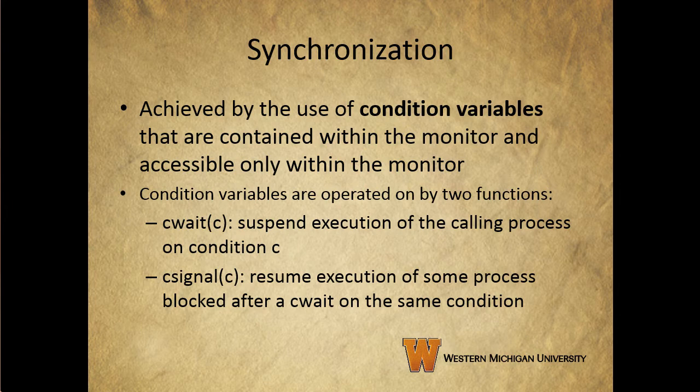A monitor supports synchronization by the use of condition variables that are contained within the monitor and accessible only within the monitor. Condition variables are a special data type in monitors which are operated on by two functions. These are going to sound familiar from our discussion of semaphores, but there are differences. C-wait tells the monitor to suspend execution of the calling process on condition C, and the monitor is then available for use by another process. C-signal resumes the execution of some process blocked after a C-wait on the same condition. If there are several such processes, we choose one of them, and if there's no such process, we just don't do anything.